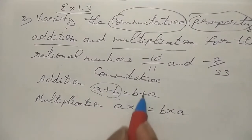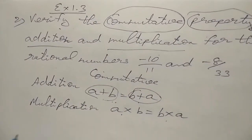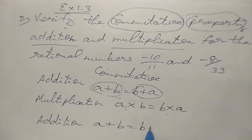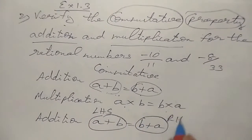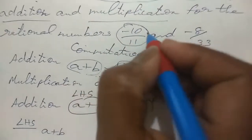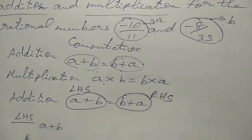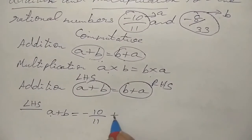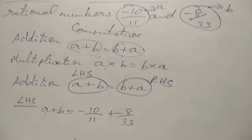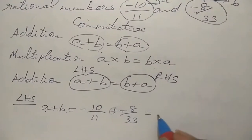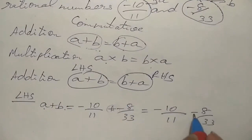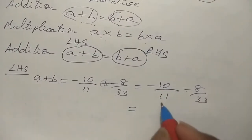We take a plus b as the left hand side and b plus a as the right hand side. Similarly we have to prove a into b equals b into a for multiplication. First we prove for addition. A is minus 10 by 11, B is minus 8 by 33. Left hand side: a plus b equals minus 10 by 11 plus minus 8 by 33. Since plus into minus gives minus, this is minus 10 by 11 minus 8 by 33.